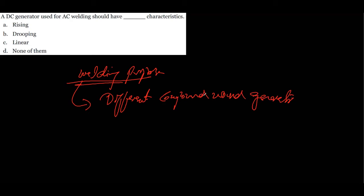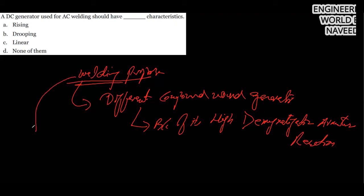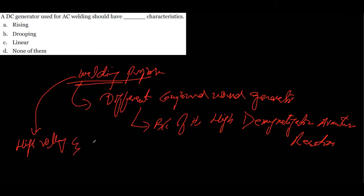We use a differential compound DC generator for welding because of its high demagnetizing armature reaction. For welding, the demand is high voltage drop and constant current, and that is fulfilled by the differential compound DC generator. So a DC generator used for welding should have a dropping characteristic.